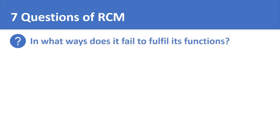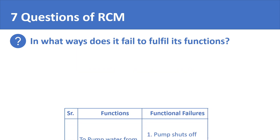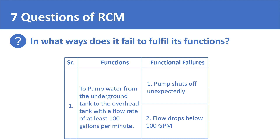The second question is: in what ways does the equipment fail to fulfill its functions? The ways in which a piece of equipment could fail are known as functional failures. For example, the pump could fail in performing its function if it trips or if the flow rate drops below 100 gallons per minute. So the second RCM step is to work out the different types of functional failures that your plant equipment could experience.